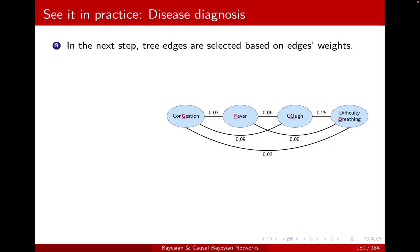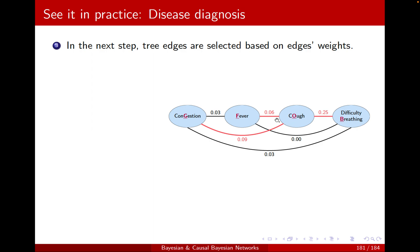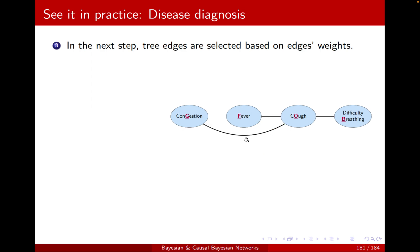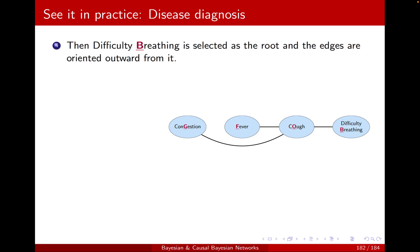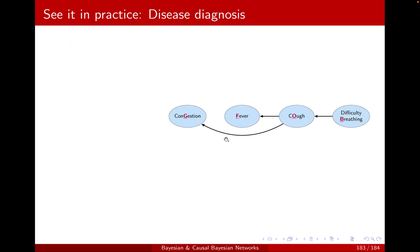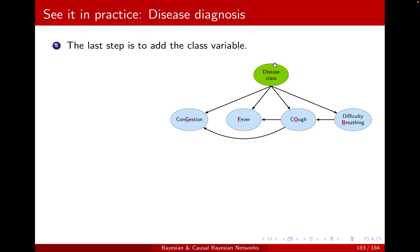Step three: tree edges are selected based on edge weights. We find the edges that construct the maximum spanning tree with maximum total weight. These selected choices have the maximum weight. Now I need to turn it into a Bayesian network — a directed graph. I can choose any root; recall score equivalence means it doesn't matter which one we choose as long as it's tree-structured without V-structures. Here we took difficulty breathing as the root and made the edges outgoing from there. We still need the class variable — add it and link it to all other variables. This is our TAN: Tree-Augmented Naive Bayes.